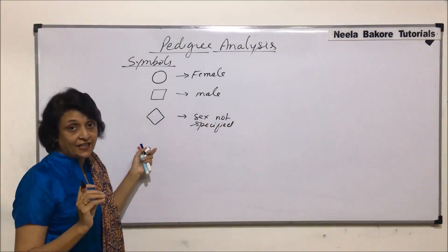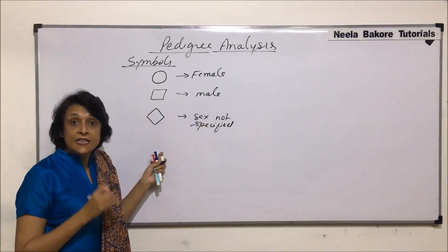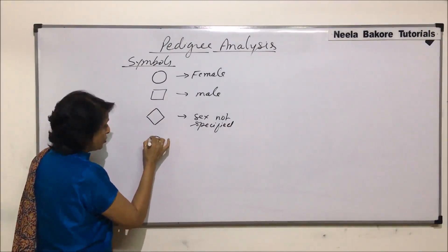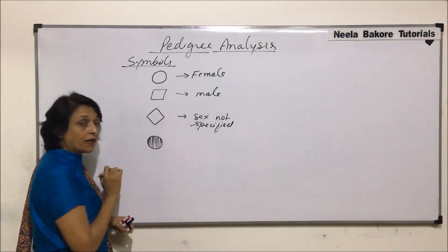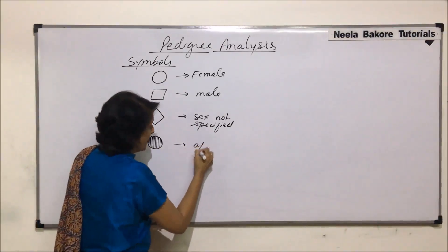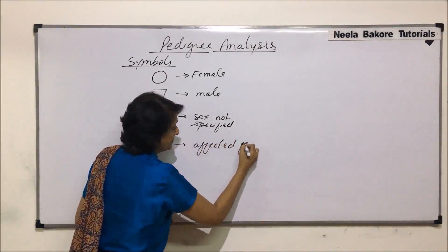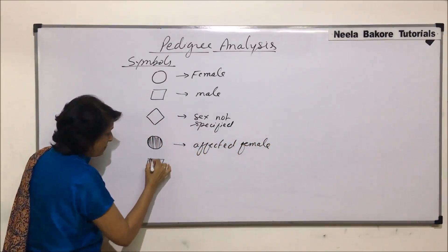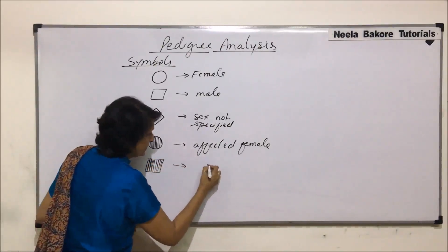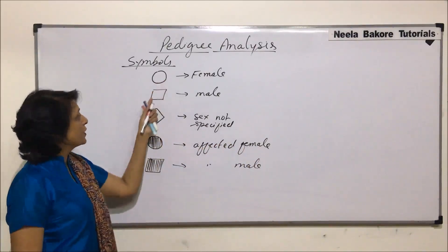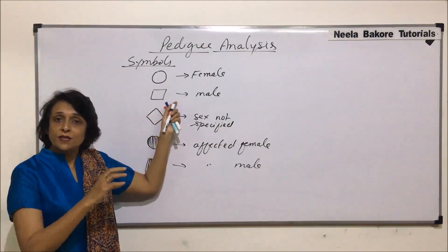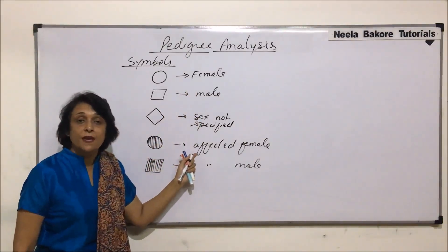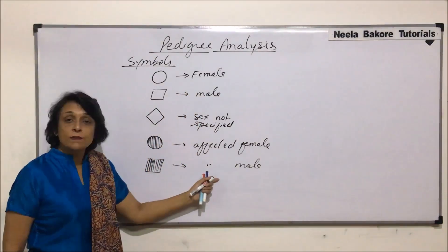If we are talking about a trait, a disease, or a condition which is seen in a particular individual — say that person is a female and is showing the trait — then we fill the circle and it becomes solid. A solid circle represents the affected female. Similarly, if we fill the square, it becomes completely solid and that represents the affected male.